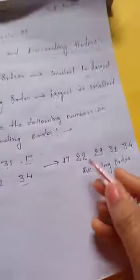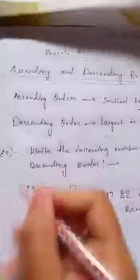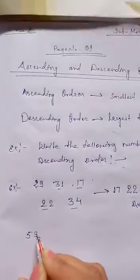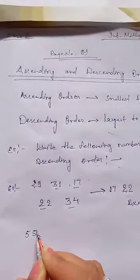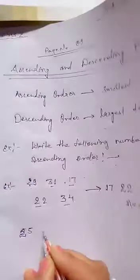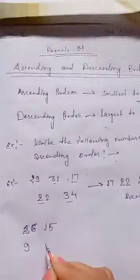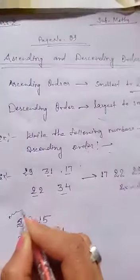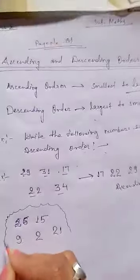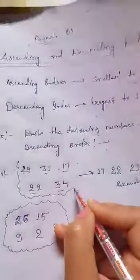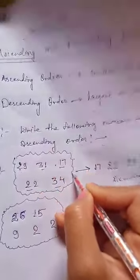Comparison is very helpful for ascending and descending order. These numbers are arranged in ascending order. Let's take another example. The given numbers are 55, 26, 15, 9, 2, and 21. Now I am going to arrange these in descending order.